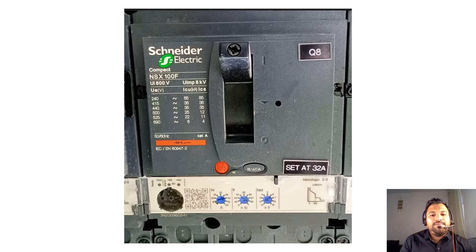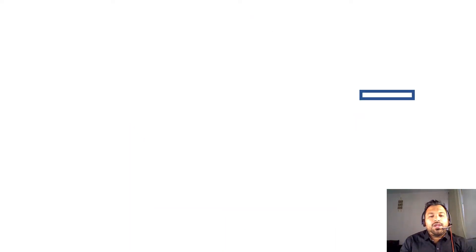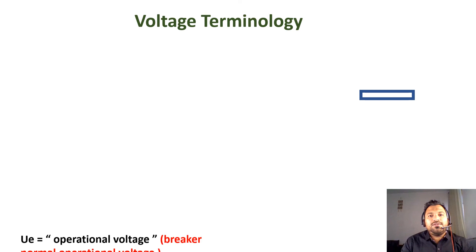If you look at this sample circuit breaker, you can see the brand name, the model type, and then the Ui value, Uimp value, and Ue values. I'm going to explain each of these in this video. Let's begin with the voltage terminology. The first one is the Ue value.